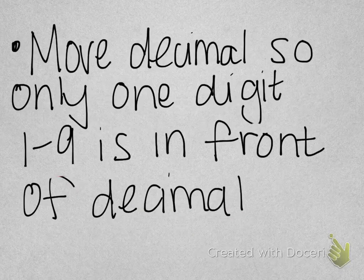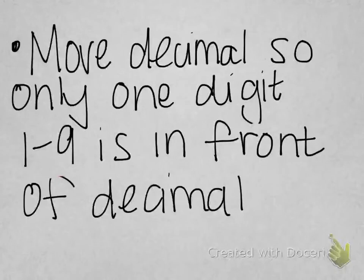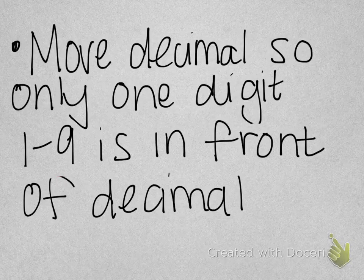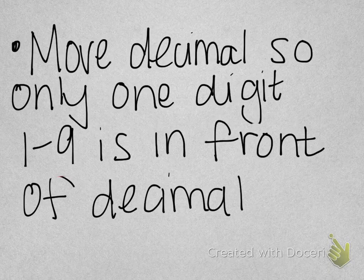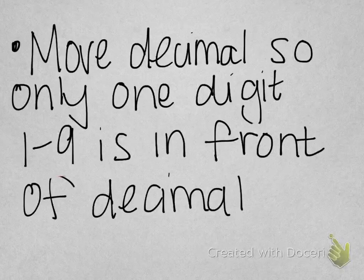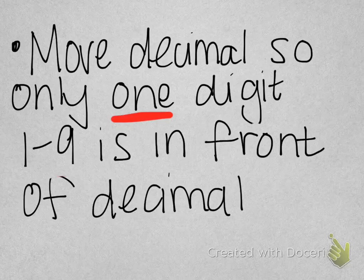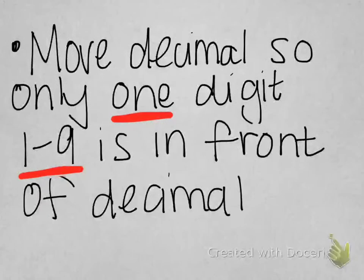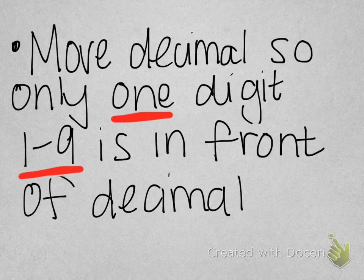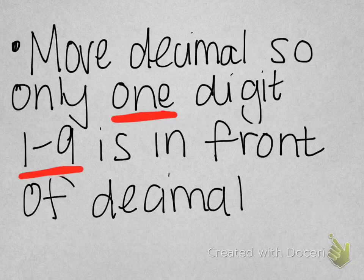What we're going to do is rewrite large and small numbers by moving our decimal point and adding exponents. We're dealing with decimals and exponents. We move the decimal point so that only one digit — a digit one through nine — is in front of the decimal. You can only have one digit in front of your decimal, and it must be one through nine.